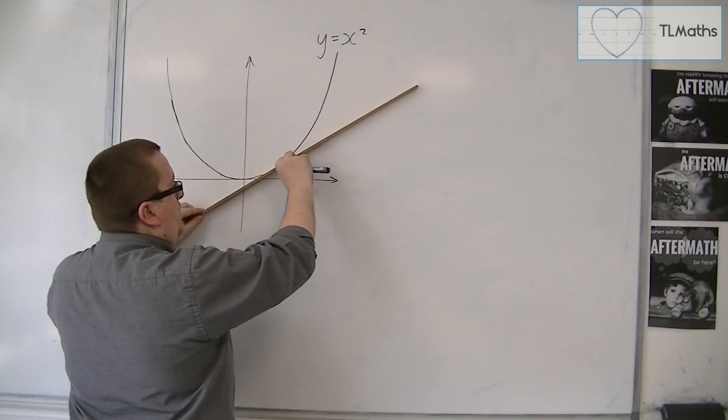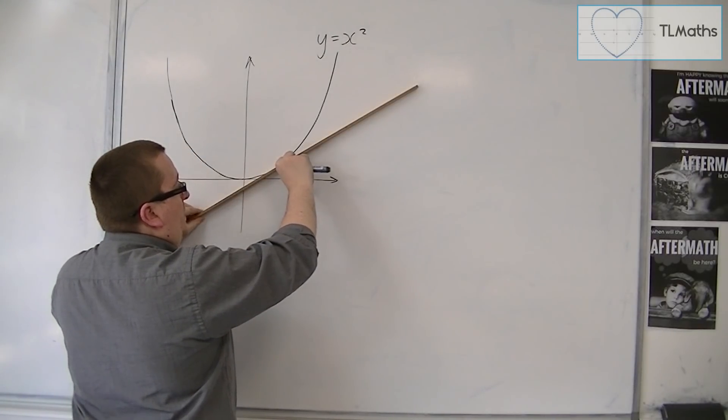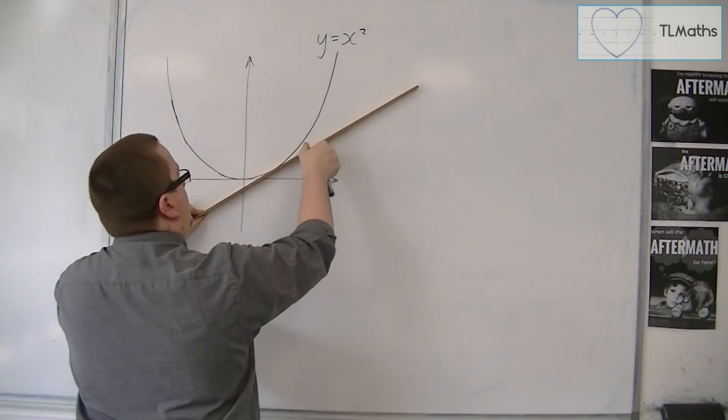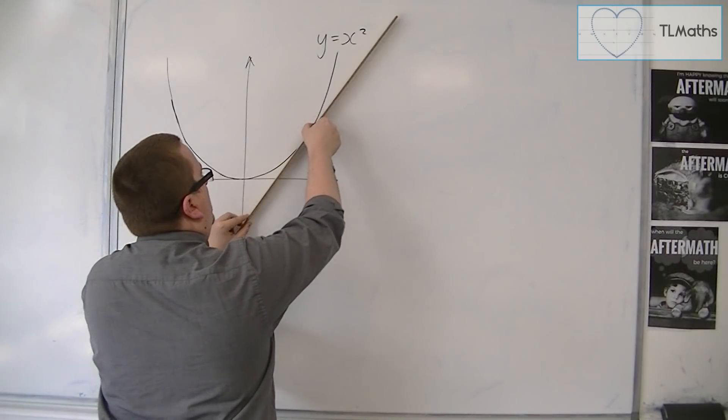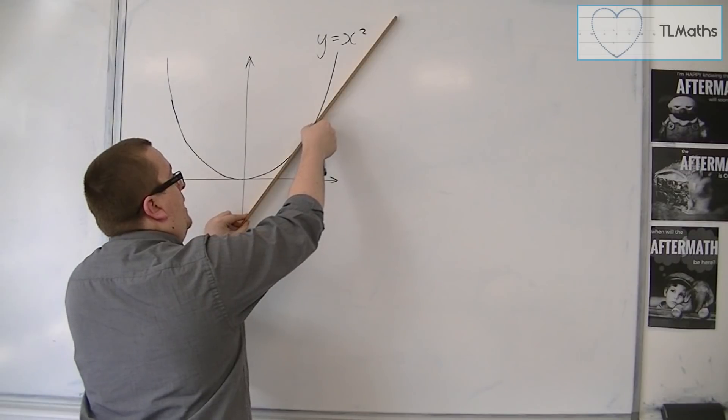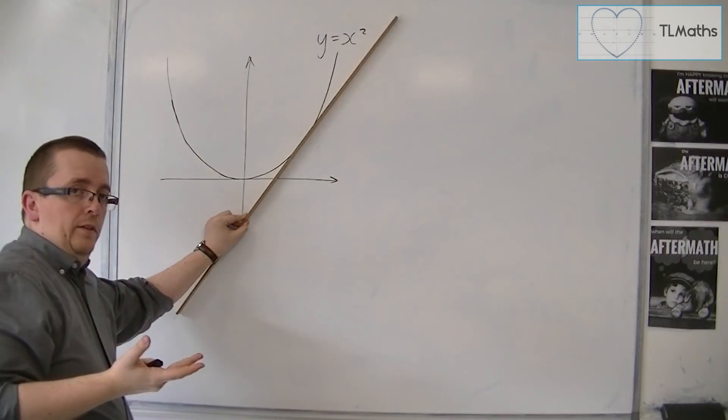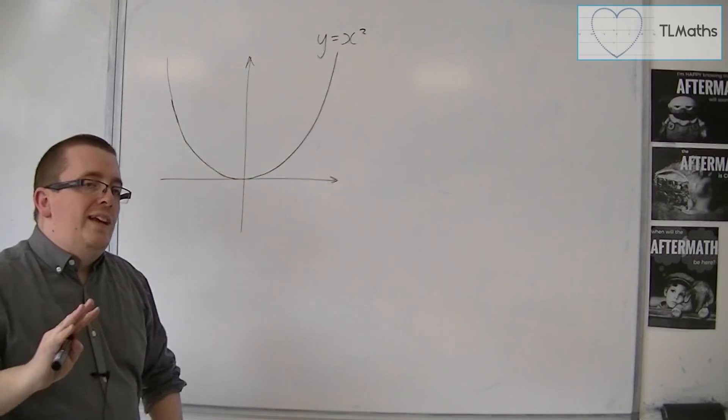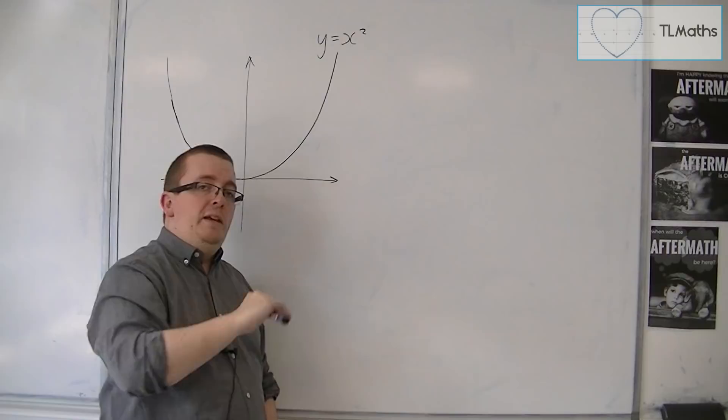That would be the steepness of the curve. But when I move slightly further up the curve, so about here, you can see that the gradient has changed. It's now steeper. So as I'm travelling up this curve, the gradient is getting steeper and steeper.